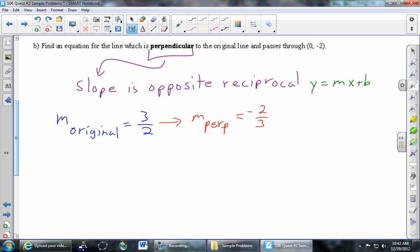So we'll use the same y equals mx plus b. Y equals m, the slope of the line we're after, the perpendicular one, negative 2 thirds x plus b.